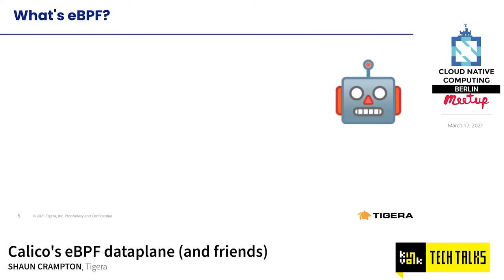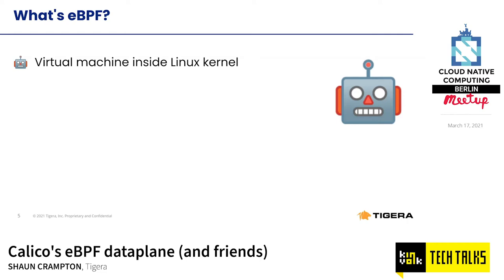eBPF — Extended Berkeley Packet Filter — is a virtual machine that runs inside the Linux kernel, a bit like the Java Virtual Machine, running its own type of bytecode. The name is a bit of an anachronism since it's not only used for packet filtering these days, but it just so happens that Calico is using it for packet filtering.